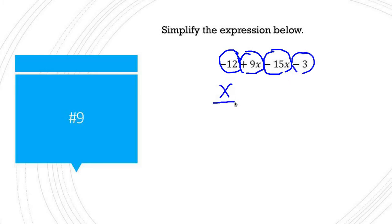So we have an x family and just a number family. So that negative 12 I'm going to put here. That positive 9x I'm going to put here. That negative 15x I'm going to put right there. And then the negative 3 goes there.